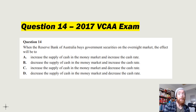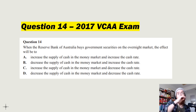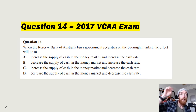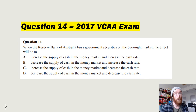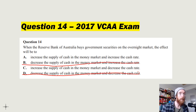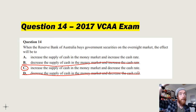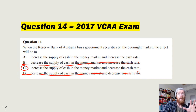Question 14 from the 2017 VCAA exam: 'When the RBA buys government securities on the overnight money market, the effect will be...' Buying puts money into the short-term money market, increasing the supply of cash. More liquidity means downward pressure on the cash rate. So the answer is: increasing the supply of cash in the short-term money market and decreasing the cash rate.